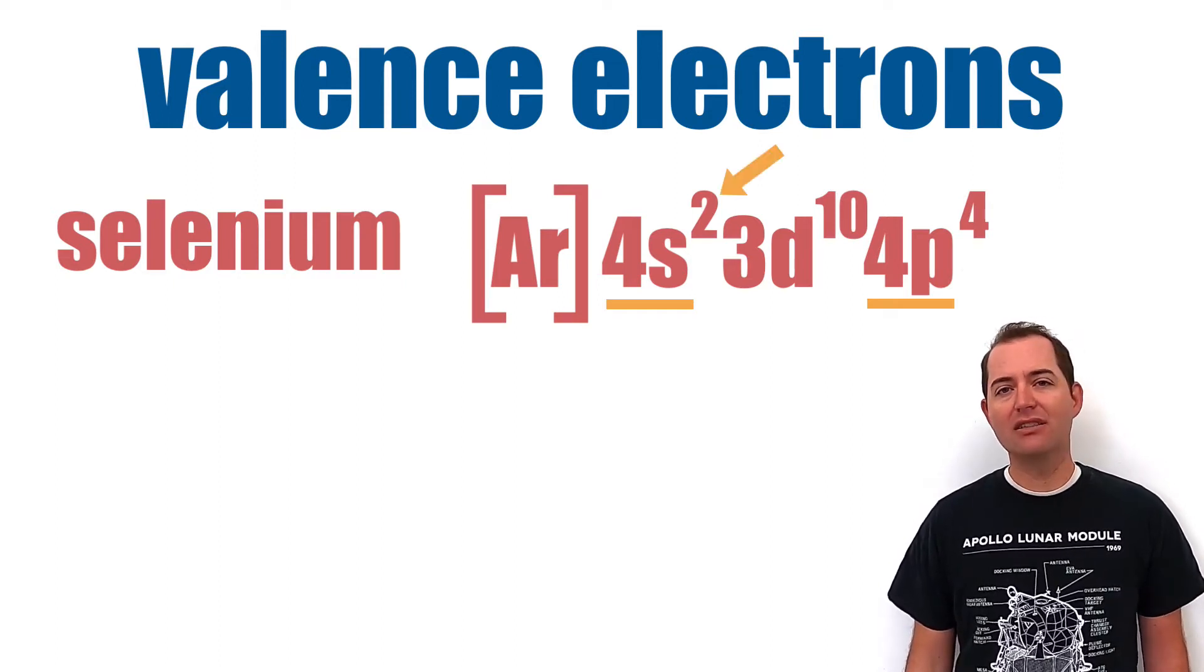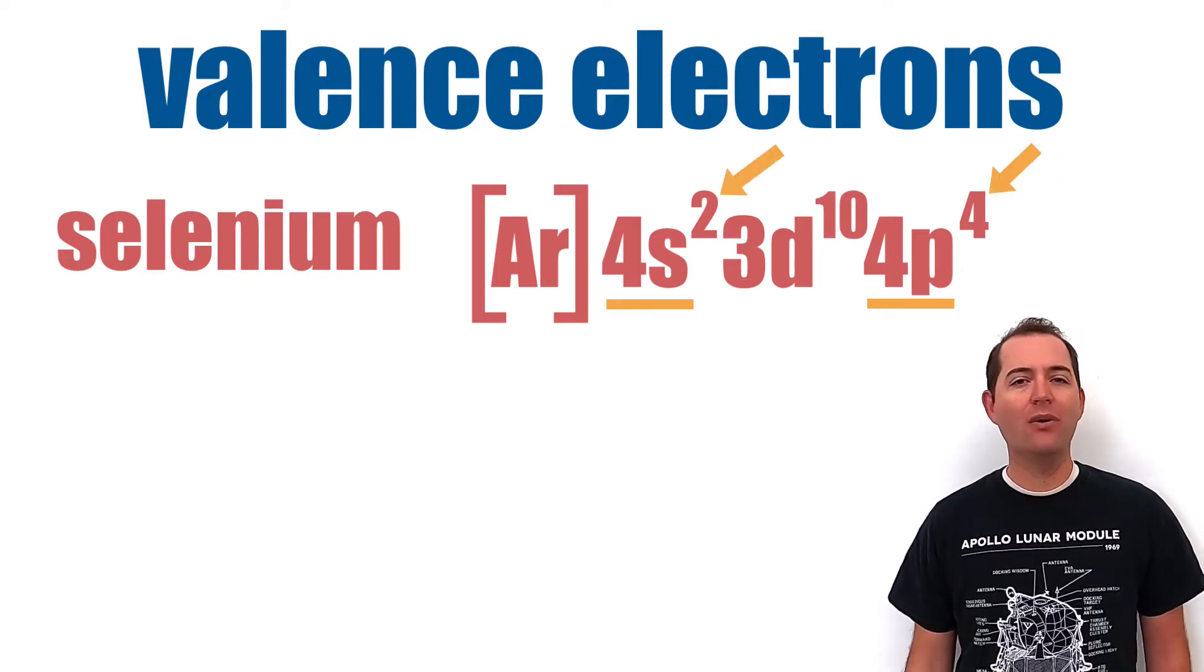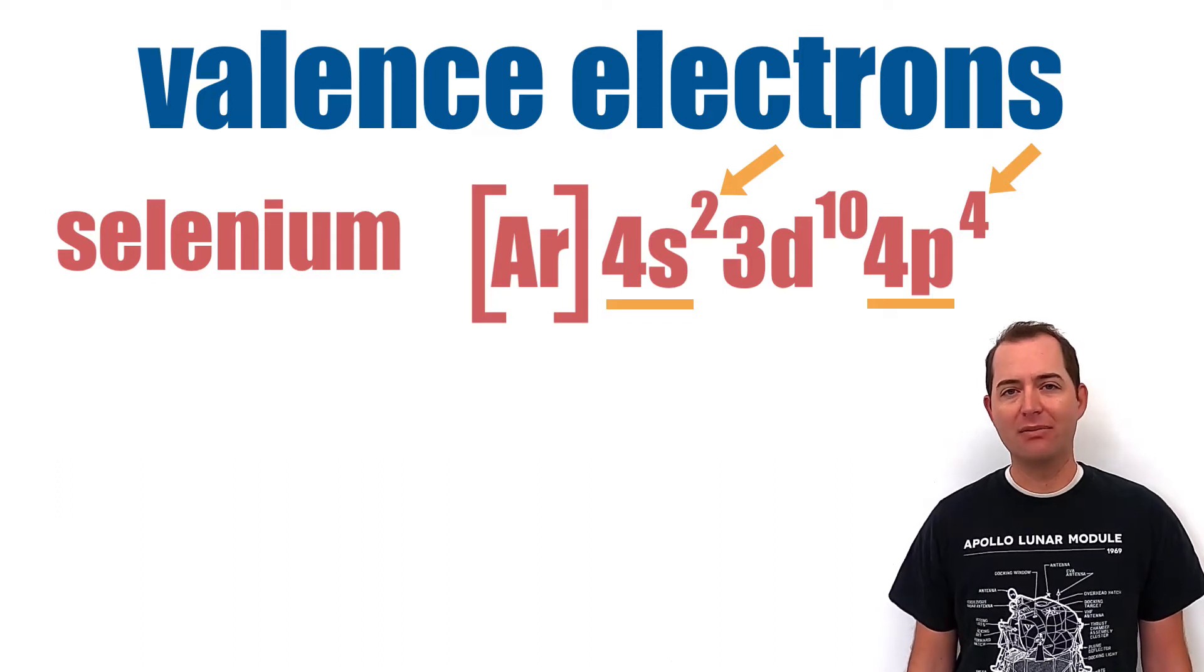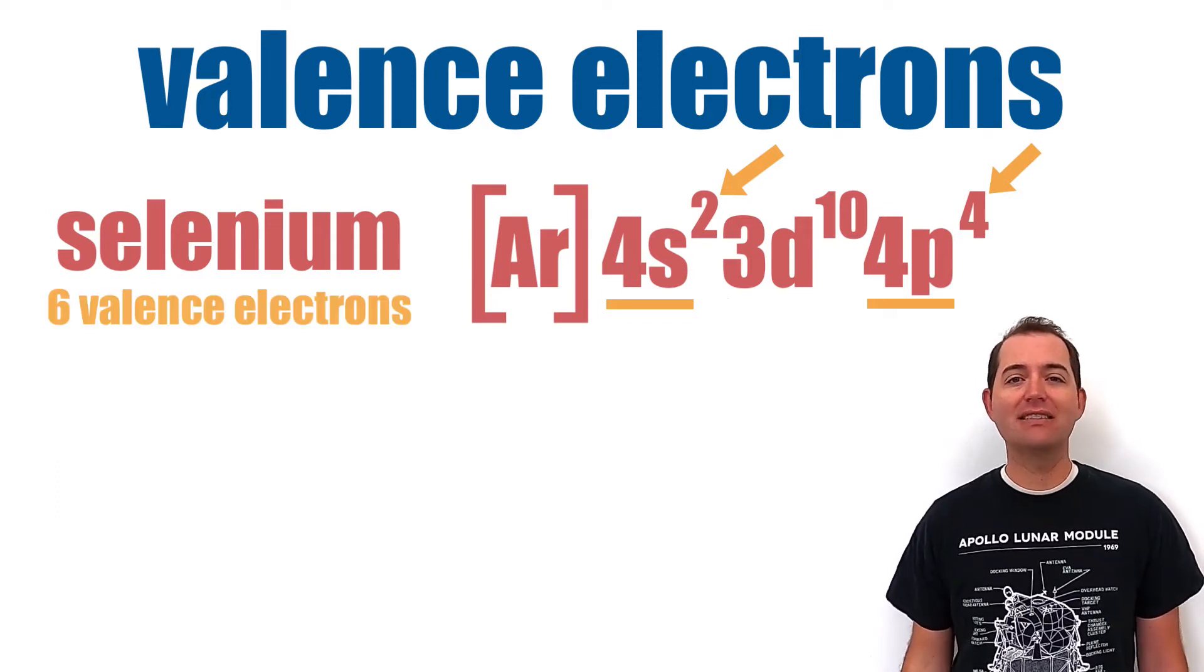Selenium has two electrons in the 4s sublevel and four electrons in the 4p sublevel for a total of six valence electrons.